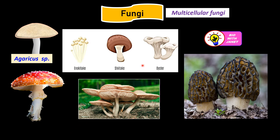Here is another type of multicellular fungi — mushrooms. Know at least one species, such as Agaricus species from the textbook. We have edible mushrooms like enoki, shiitake, and oyster mushrooms, and also poisonous ones. Mushrooms are saprophytes that break down dead organic matter in their environment.